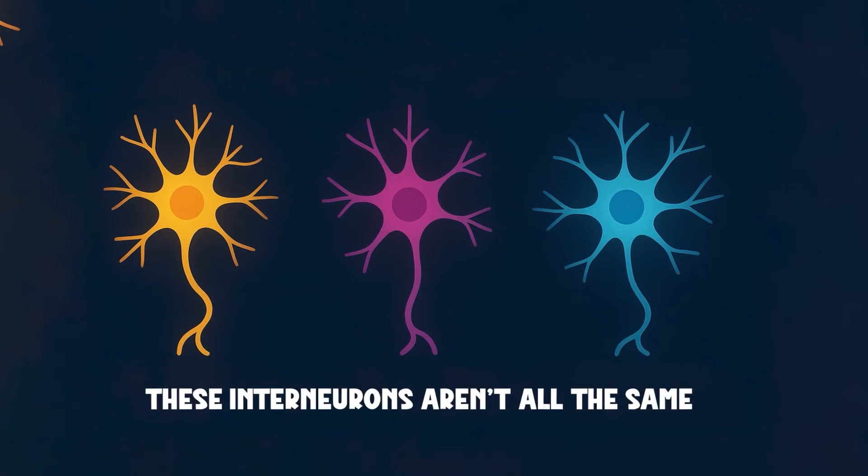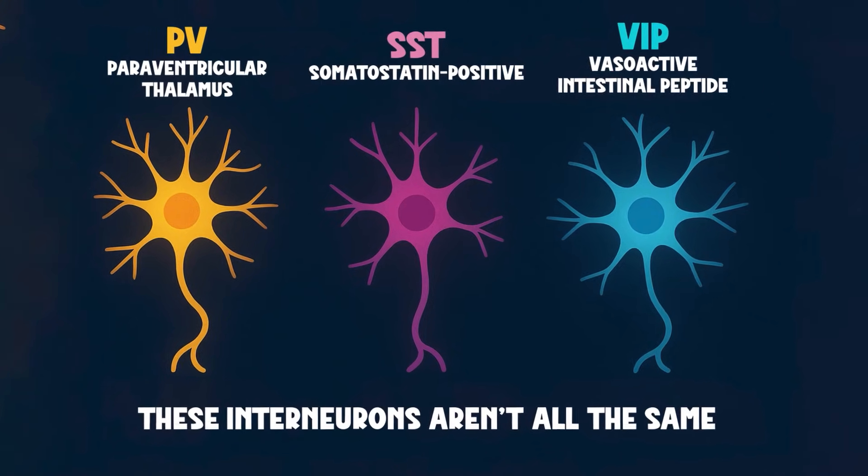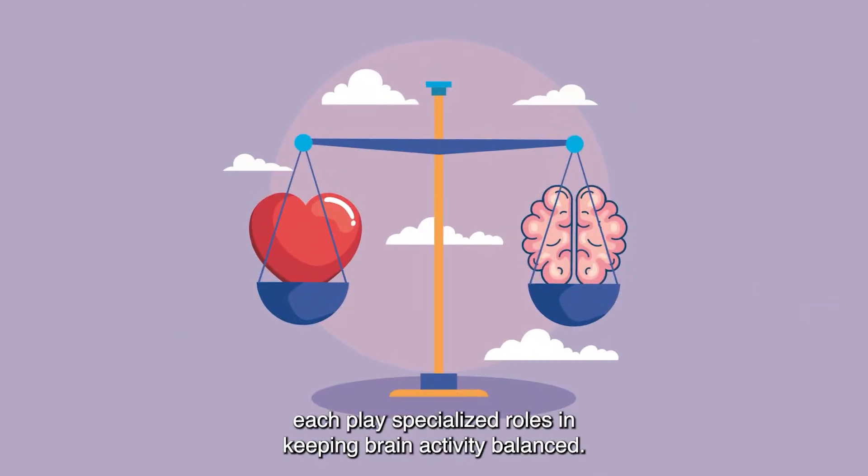These interneurons aren't all the same. Some, like PV, SST, and VIP cells, each play specialized roles in keeping brain activity balanced.